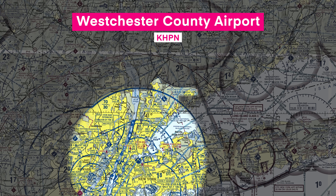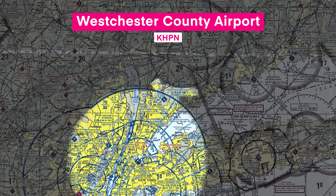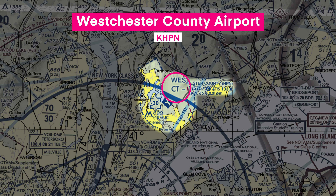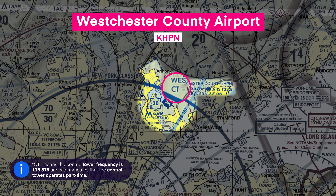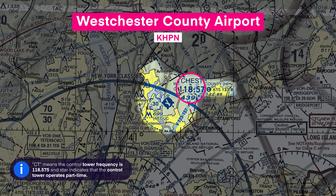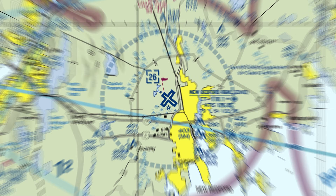This is because there's an overlying Bravo airspace that starts at 3,000 feet MSL. The chart can tell us a lot about the airport as well. For example, CT means control tower, and the frequency is 118.575. The star indicates that the control tower operates part-time. Now, you might be wondering why a tower sometimes shuts down. Well, airports that aren't very busy outside peak hours typically shut the tower down overnight.